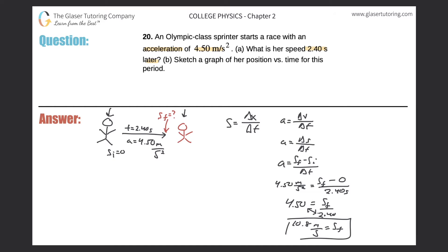Now for part B. It says to sketch a graph of her position versus time for this period. So what we can do is come up with a few general graphs.